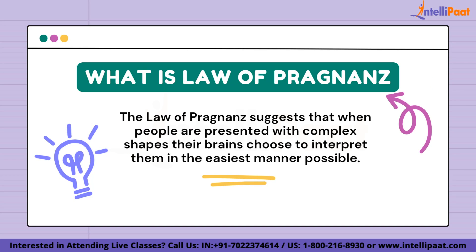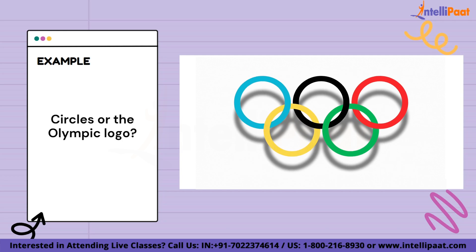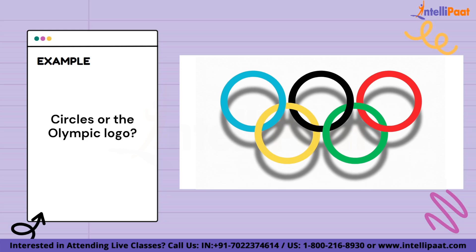What is the law of Prägnanz? People will perceive and interpret complex images in the simplest form possible, because it is the interpretation that requires the least effort on the mind. This is why the law of Prägnanz suggests that when people are presented with complex shapes, their brains choose to interpret them in the easiest manner possible. This law is also referred to as the law of good figure.